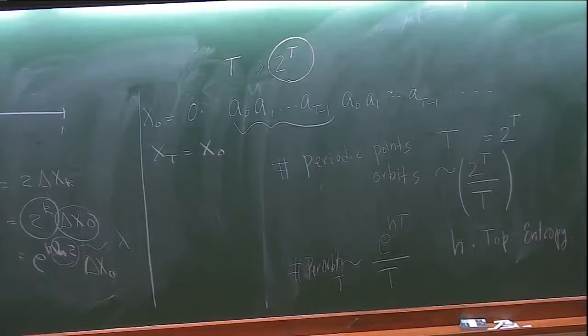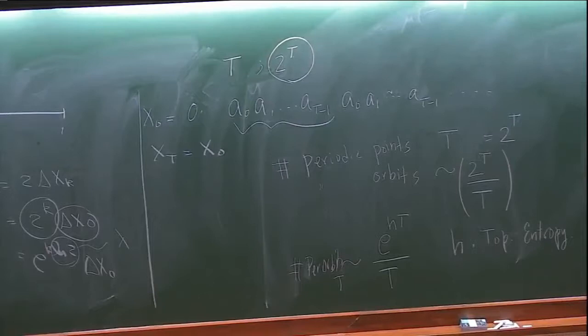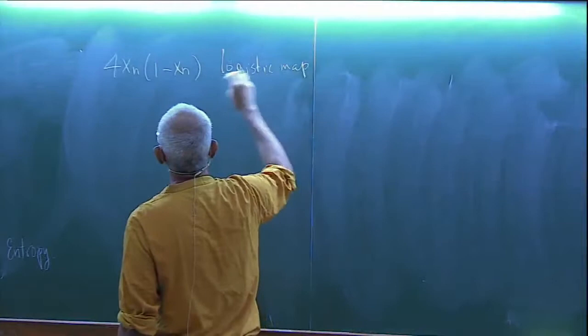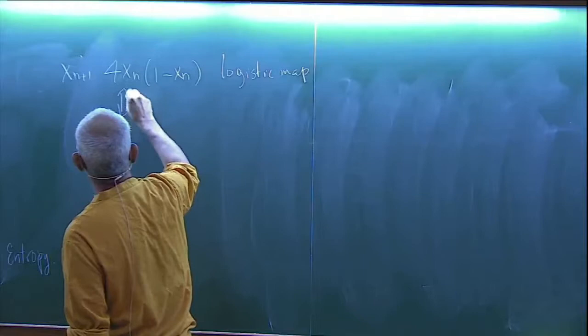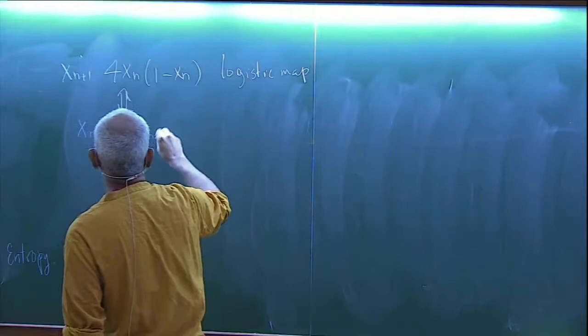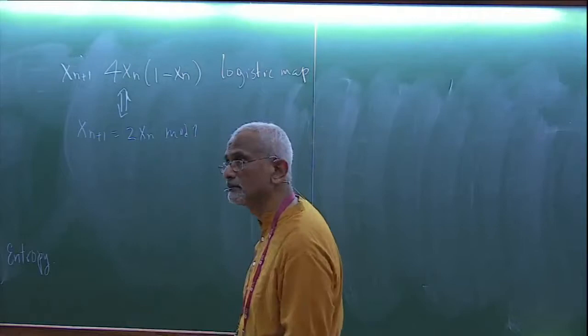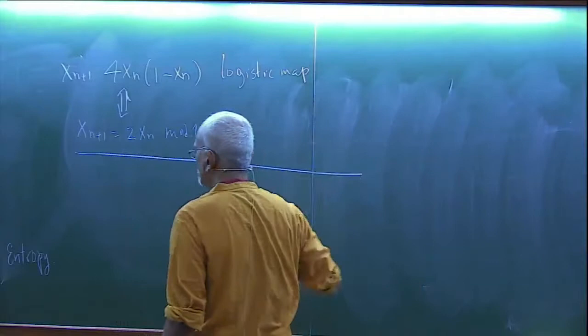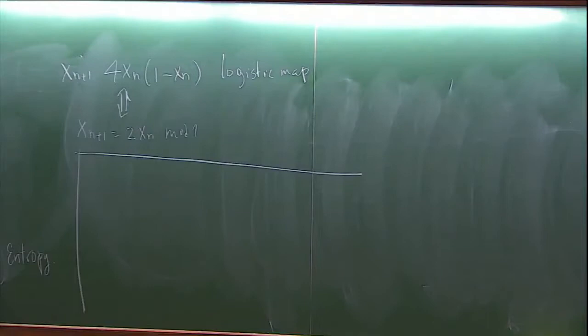The topological entropy is called topological because if you apply a smooth change of coordinates to the map, the number of periodic orbits does not change — their locations can change, but not the count. The first map I wrote, 4x_n(1-x_n) — the logistic map — is closely related to the doubling map by a smooth transformation, and they share the same Lyapunov exponents and topological entropies.